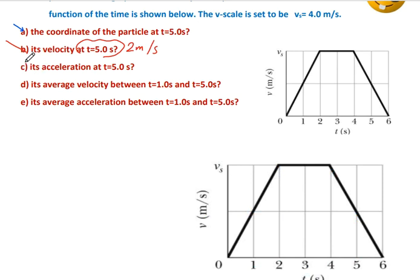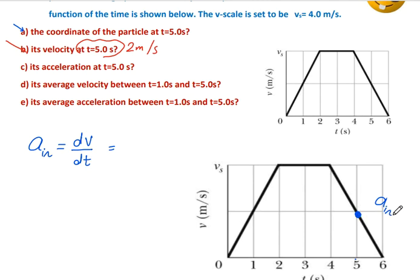The third question is acceleration at time equals 5 seconds. Instantaneous acceleration equals dv by dt, or the tangent slope. We will draw a tangent at the point and determine its slope.